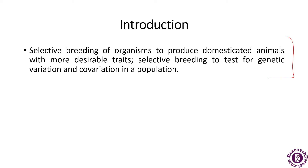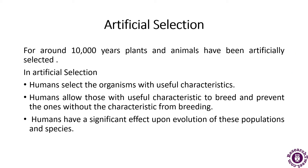For about 10,000 years, plants and animals have been artificially selected. In the process of artificial selection, humans select organisms with useful traits — for example, if a plant has a higher yield, that higher yield trait will be transferred to another plant that has a lower yield. Humans select these plant species carefully, allowing those with useful characteristics to breed and preventing those without the characteristic from breeding.